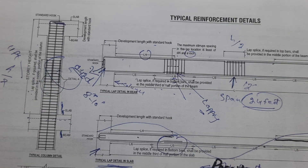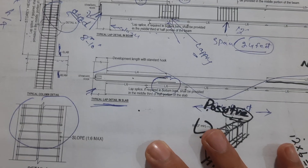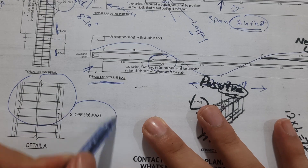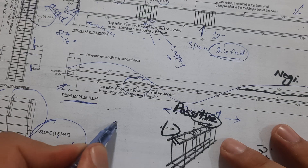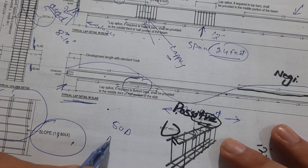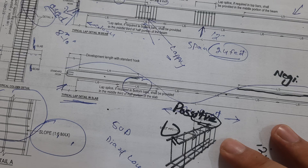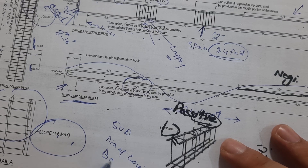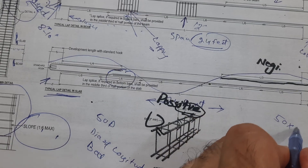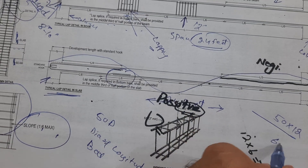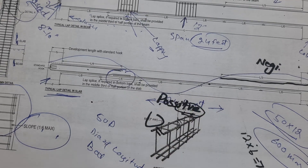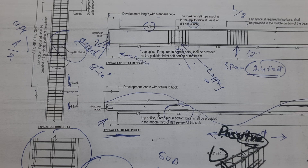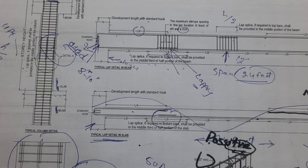Now let me show you Detail A. The slope should be a maximum of 1:6, and the lapping should not be less than 50d, where d is the diameter of the longitudinal bar. For example, 50 multiplied by 12 mm equals 600 mm. If the bar is 16 mm, then 50 multiplied by 16 gives you the lap length for that bar size.